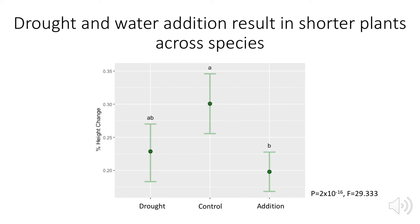Within those same drought, control, and addition sites, we can also think about height. This was fairly interesting to us. The only significant difference was control versus addition — the sites getting just normal precipitation were often taller than the rest, but in the addition and drought sites they were shorter. Why plants getting very little water and plants getting a lot of water are both shorter than the control is unclear. It could be something to do with competing for light, or putting more resources into the soil to either pick up more water or get other needed nutrients.